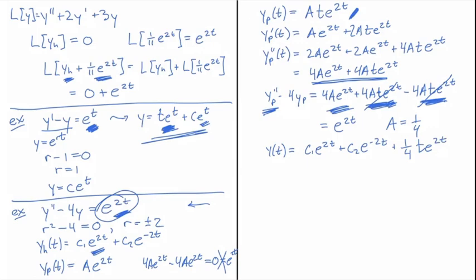And so that is the method for using the method of undetermined coefficients when the right-hand side is a solution to the homogeneous equation.